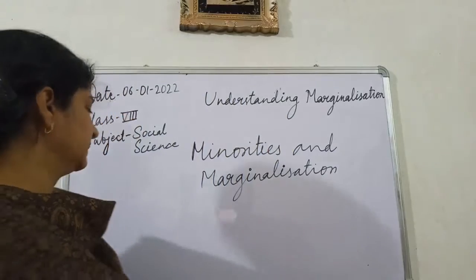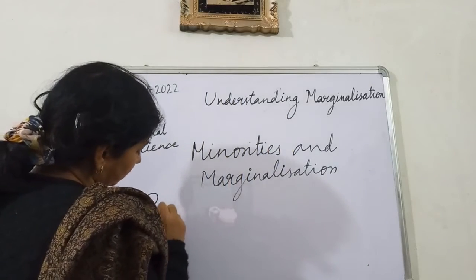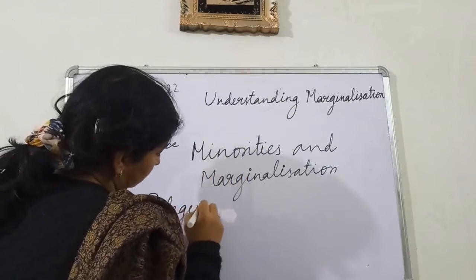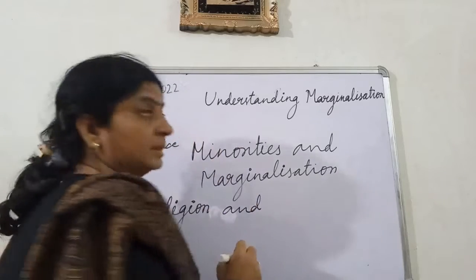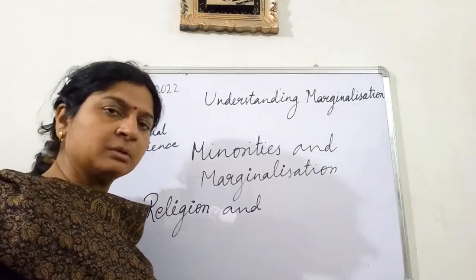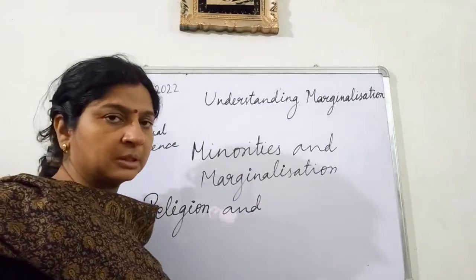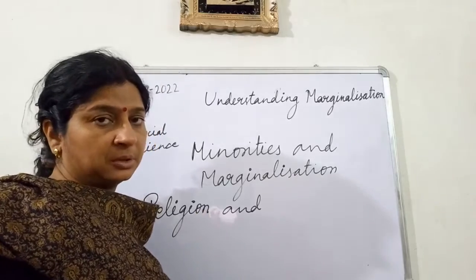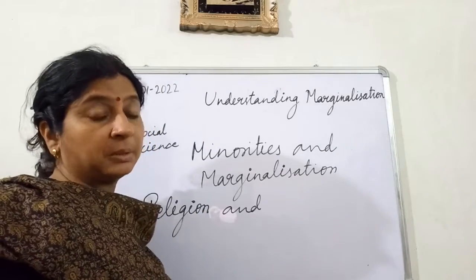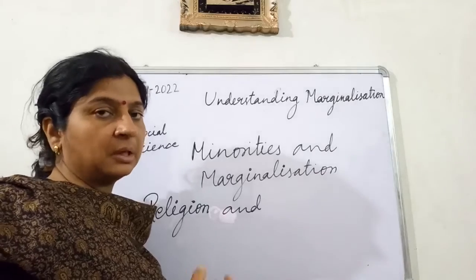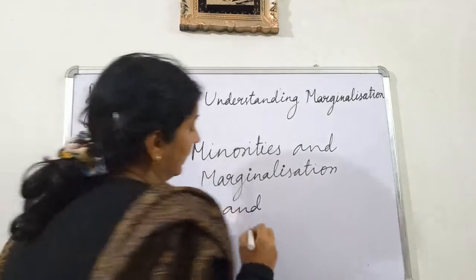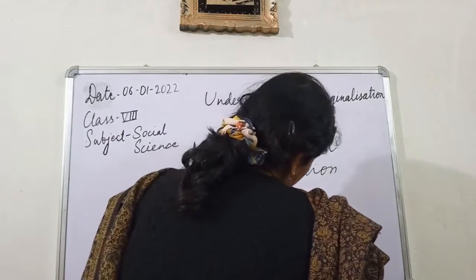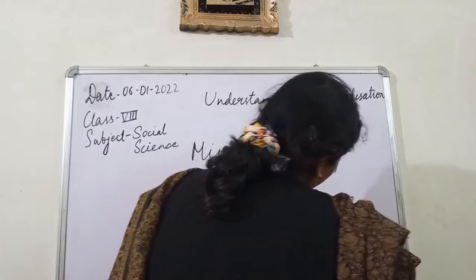Now, this minority group can exist on two bases. The first is religion, and the second is on the basis of language. On the basis of gender also there can be majority and minority groups. But here we are concerned with minority groups on the basis of religion and language.